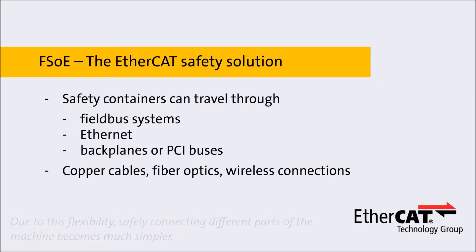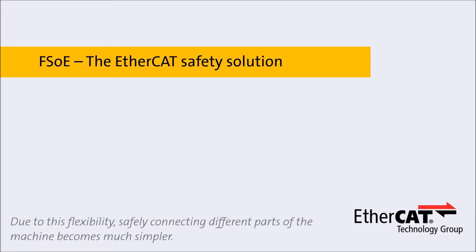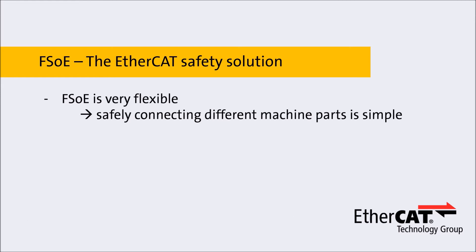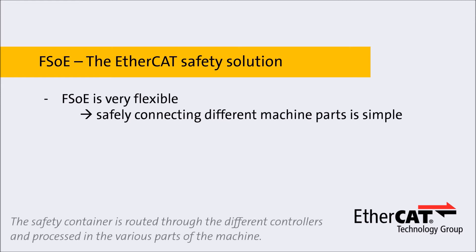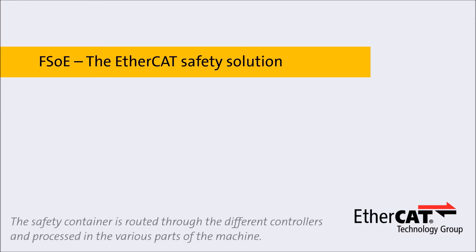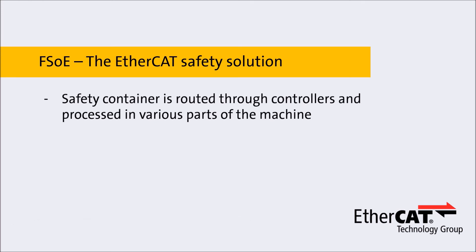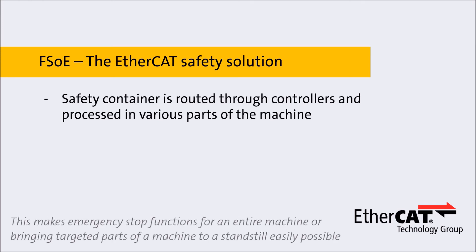Due to this flexibility, safely connecting different parts of the machine becomes much simpler. The safety container is routed through the different controllers and processed in the various parts of the machine.